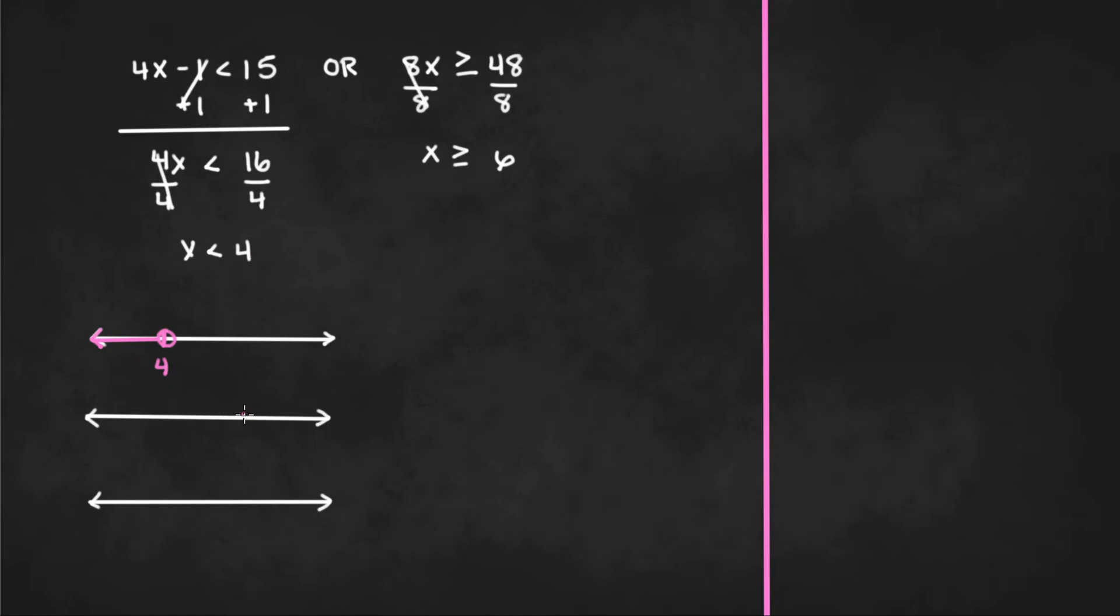Our second inequality is x is greater than or equal to 6. So if 6 was right here we would put a closed dot at 6 because it's greater than or equal to and we're going to be moving to the right because that's where the numbers get bigger.